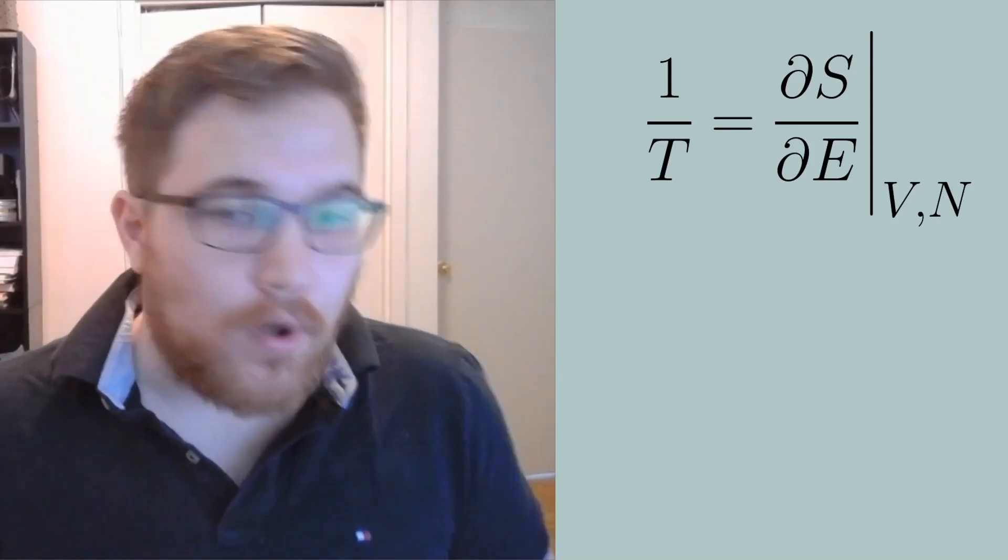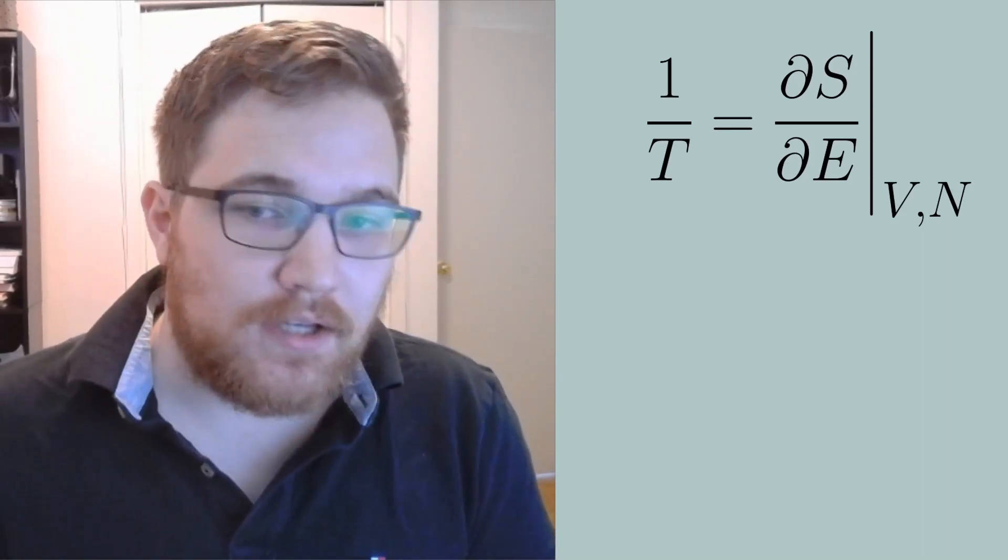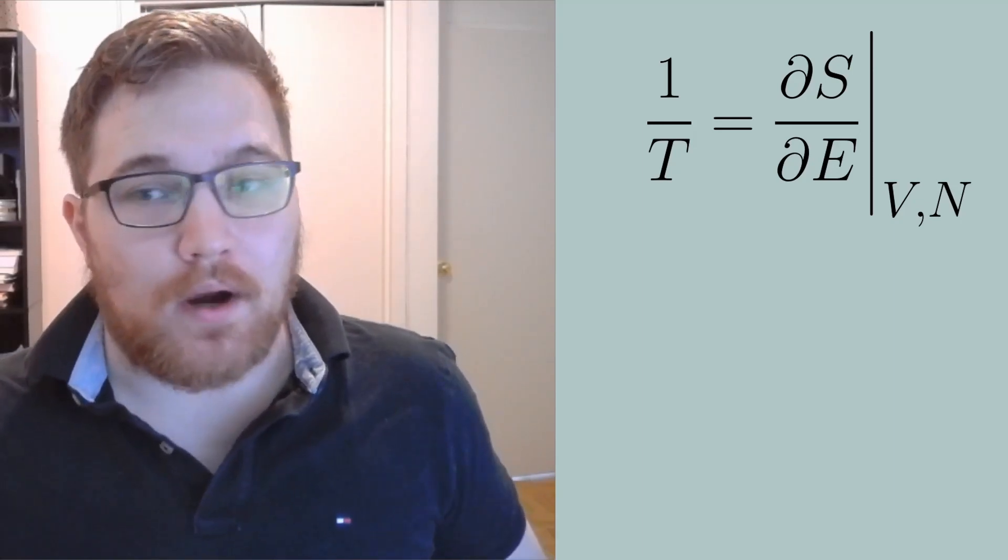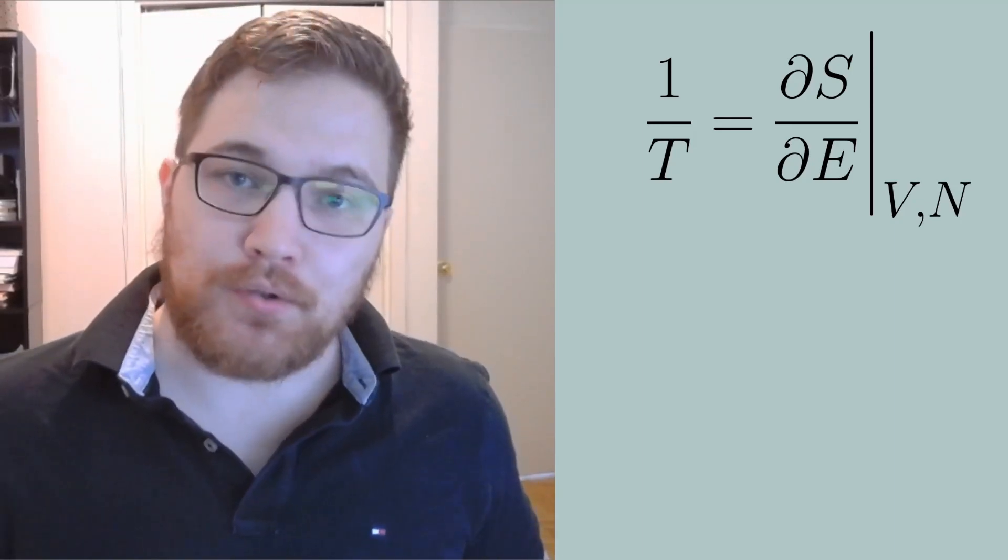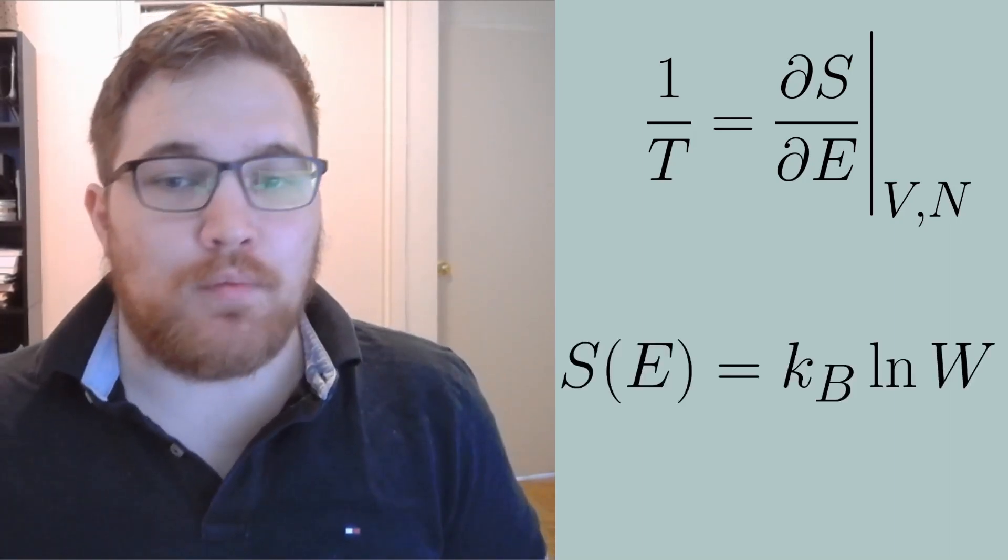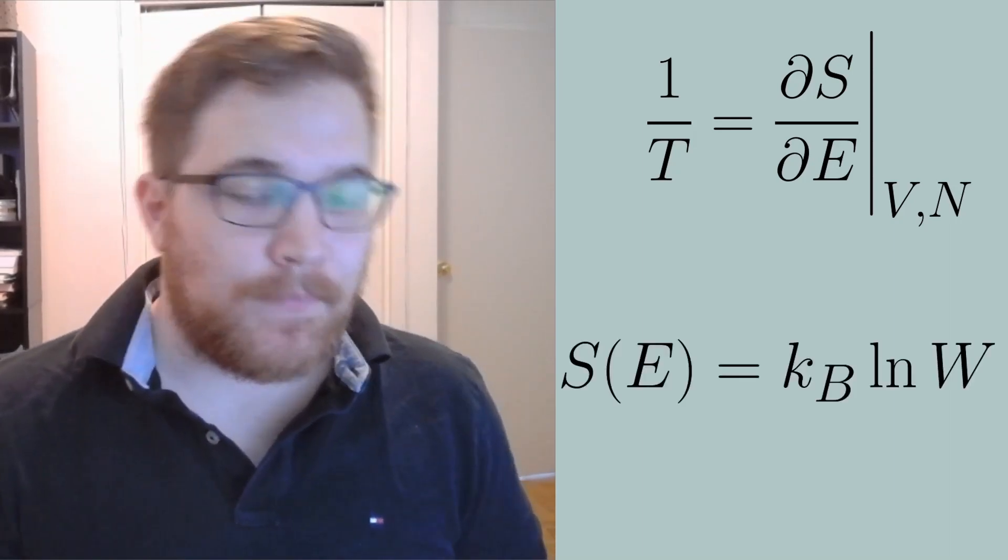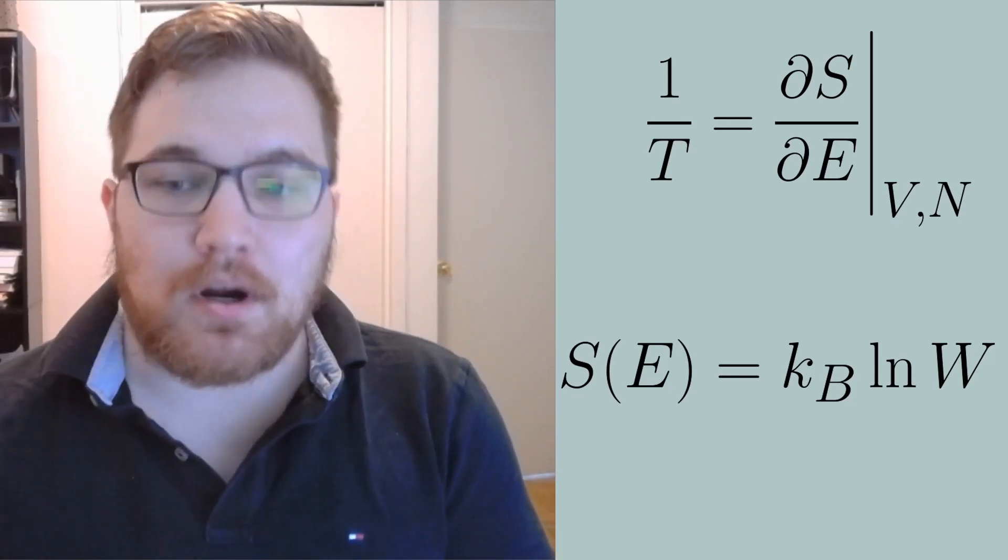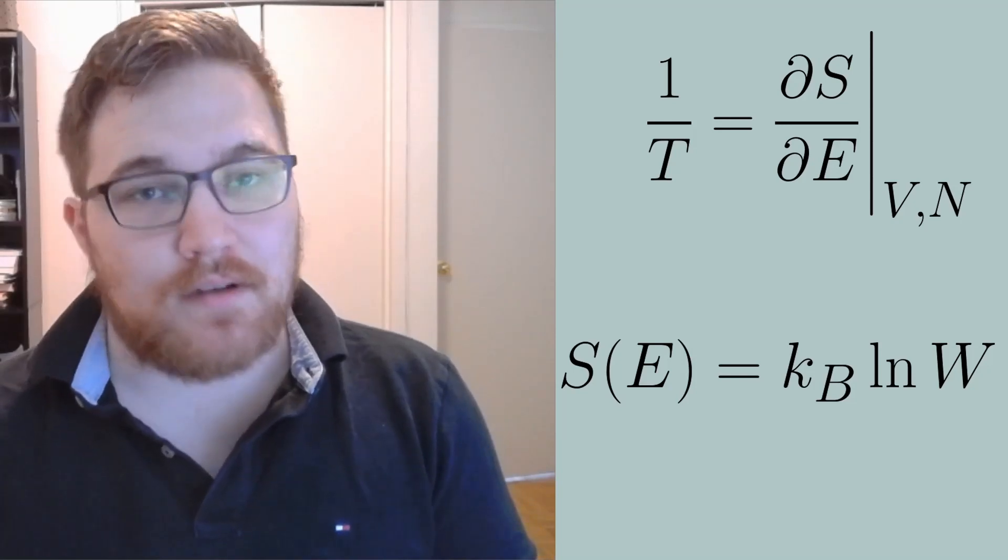To do this, we need to remind ourselves of a few key things. First is, what is the definition of temperature? One over the temperature is defined as the derivative of the entropy with respect to the energy, where we keep volume and particle number fixed. For the sake of our example, the entropy will be given in the usual way: it is the Boltzmann constant times the natural logarithm of the number of accessible microstates W.